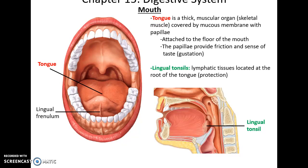The tongue is a very muscular organ made up of skeletal muscles and covered by a mucous membrane. It has various papillae which allow for taste sensation — gustation — as well as providing friction so the tongue can move materials around. We have the lingual tonsils at the very base of the tongue, which are lymphatic tissues that help protect us from pathogens that manage to enter through the oral cavity.